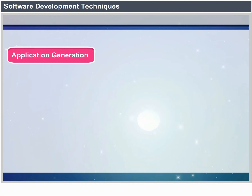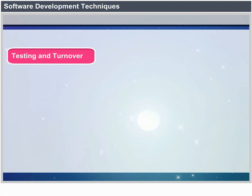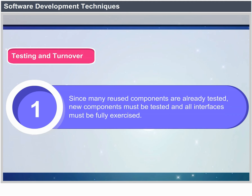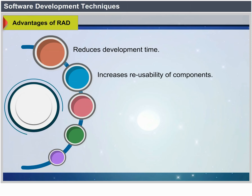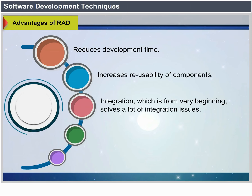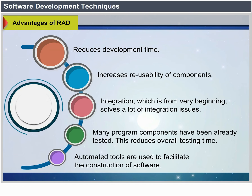Application Generation: RAD assumes the use of fourth-generation techniques and works to reuse existing program components. Testing and Turnover: many reuse components are already tested; however, new components must be tested and all interfaces fully exercised. Advantages of RAD: reduced development time, increased reusability of components, integration from the very beginning solves many integration issues, many program components have already been tested reducing overall testing time, and automated tools are used to facilitate construction.